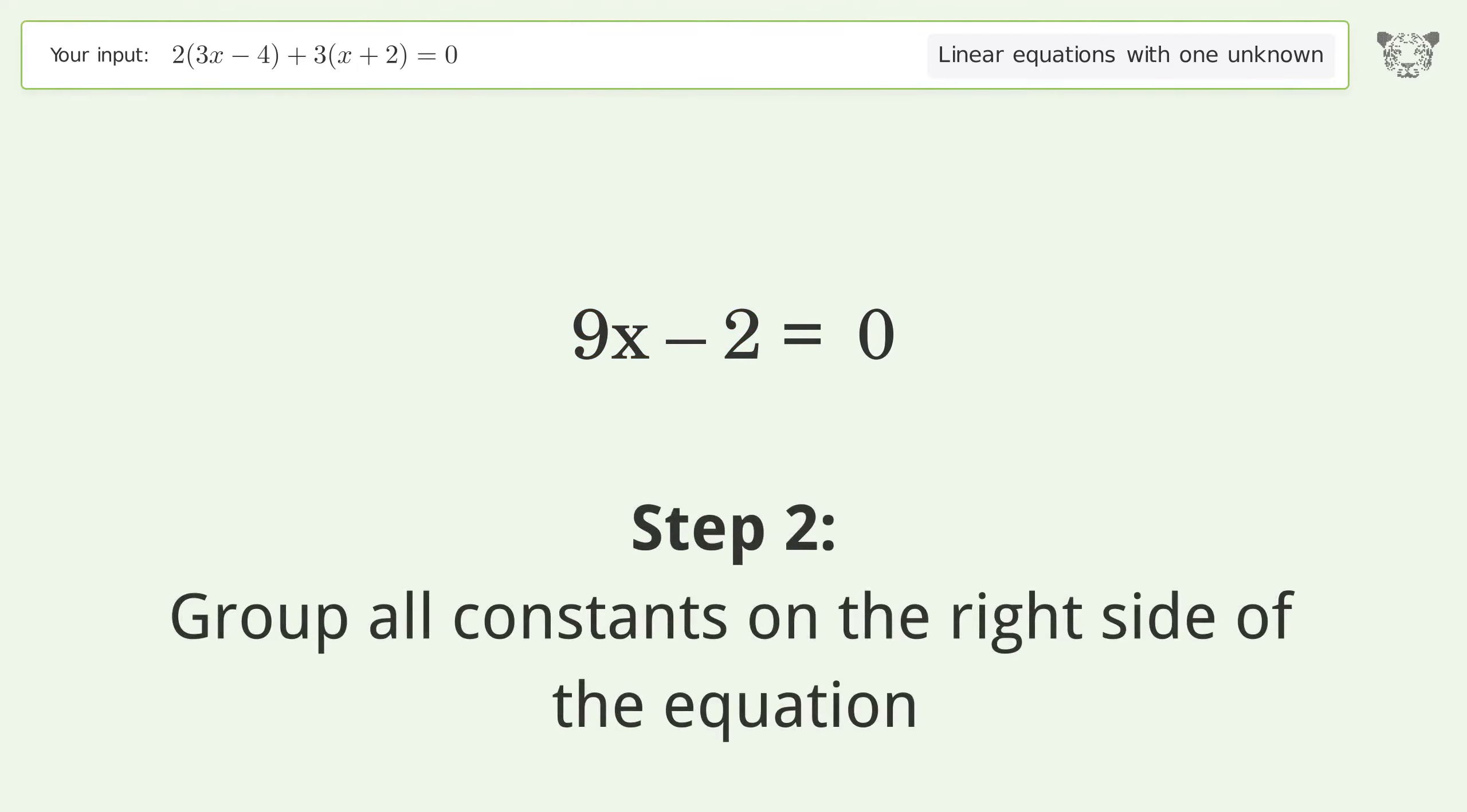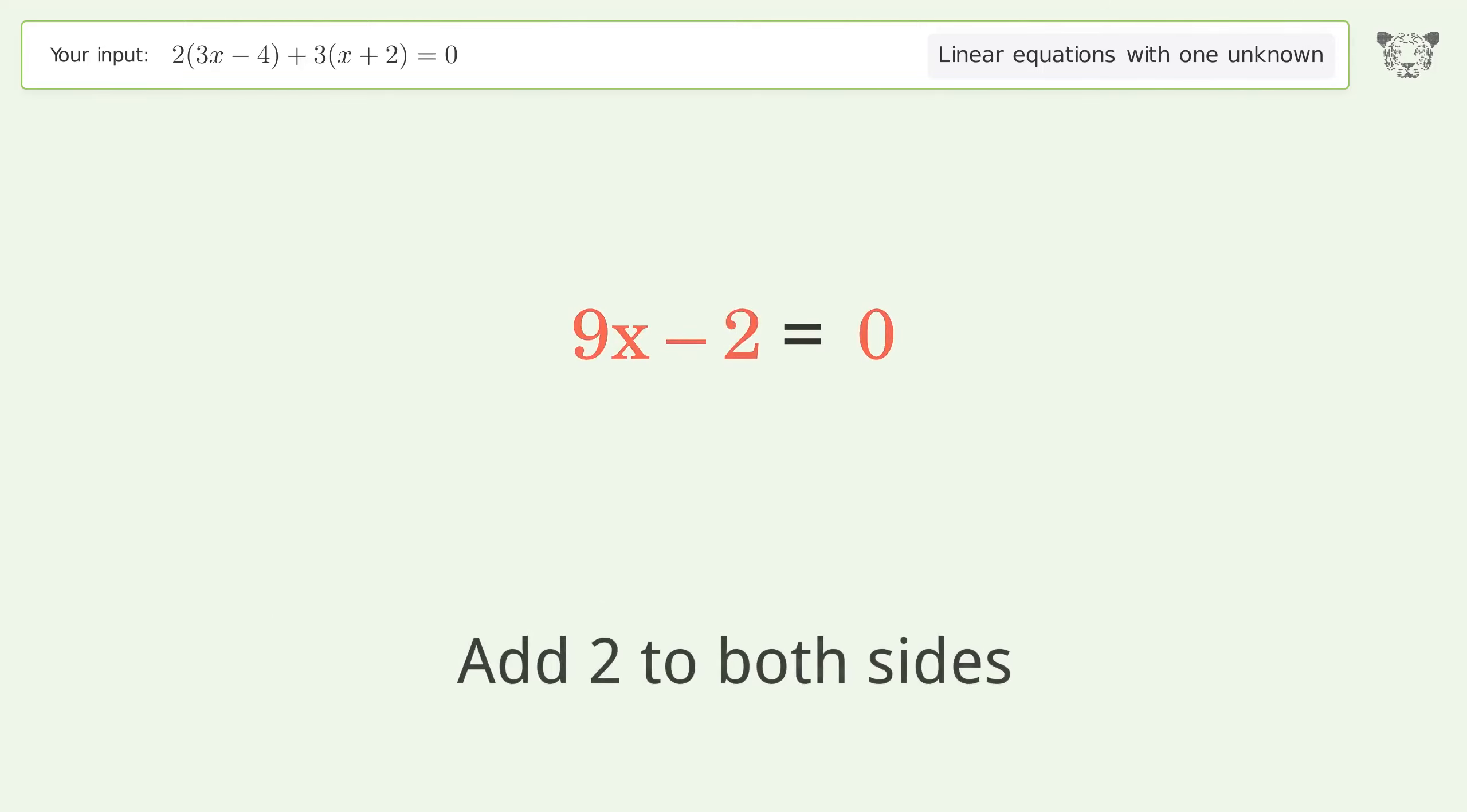Group all constants on the right side of the equation. Add 2 to both sides. Simplify the arithmetic.